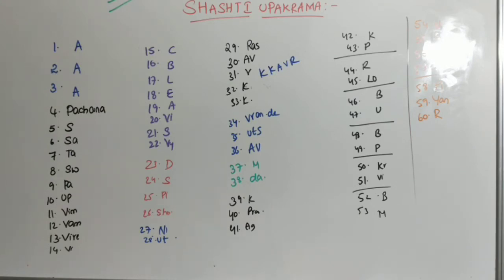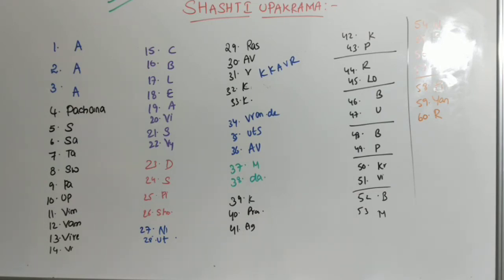Six sets were completed. Now moving on to the seventh set. The thirty-fourth one is Vranadupana, thirty-fifth is Utsadana, and thirty-sixth is Avasadana — completing thirty-six. The thirty-seventh one is Mrudu Karma, and the thirty-eighth one is Daruna Karma.